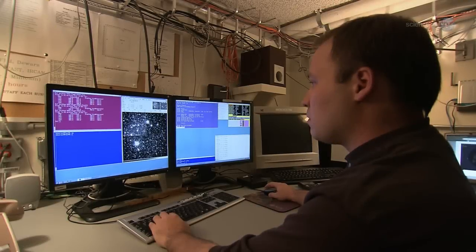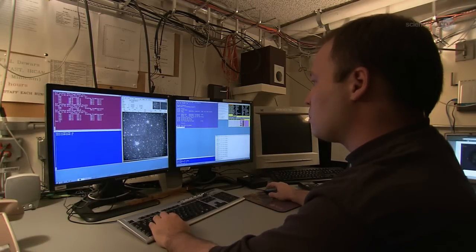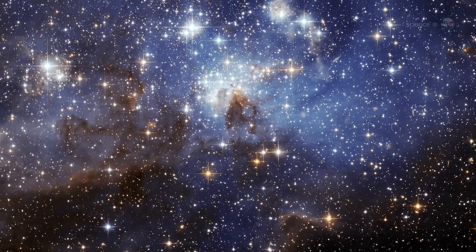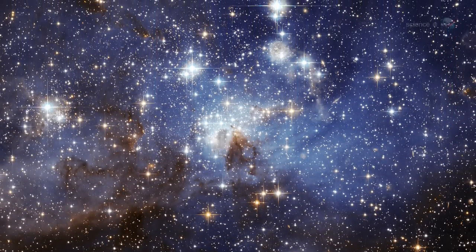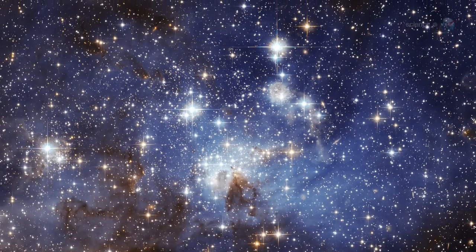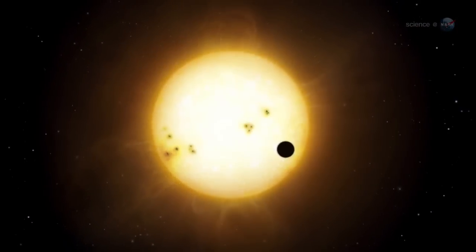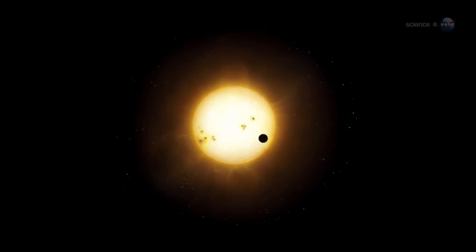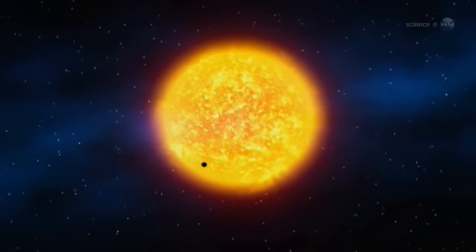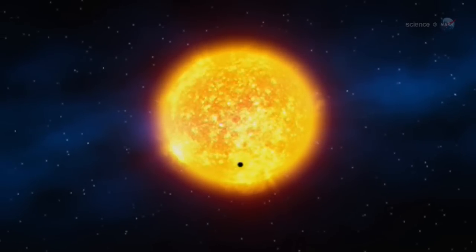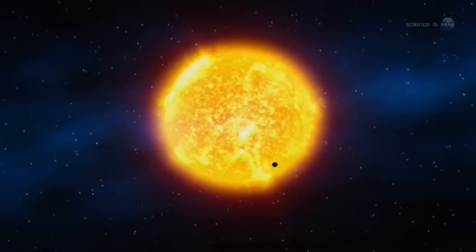But finding a Goldilocks planet is just the first step. Getting to know it is much more difficult. The problem is that, in the cosmic scheme of things, Earth-sized planets are relatively small, and the ones Kepler is finding are staggeringly far away. Most are hundreds or even thousands of light-years away from Earth. Almost completely hidden by the glare of their parent stars, these distant pinpricks are very difficult to study.